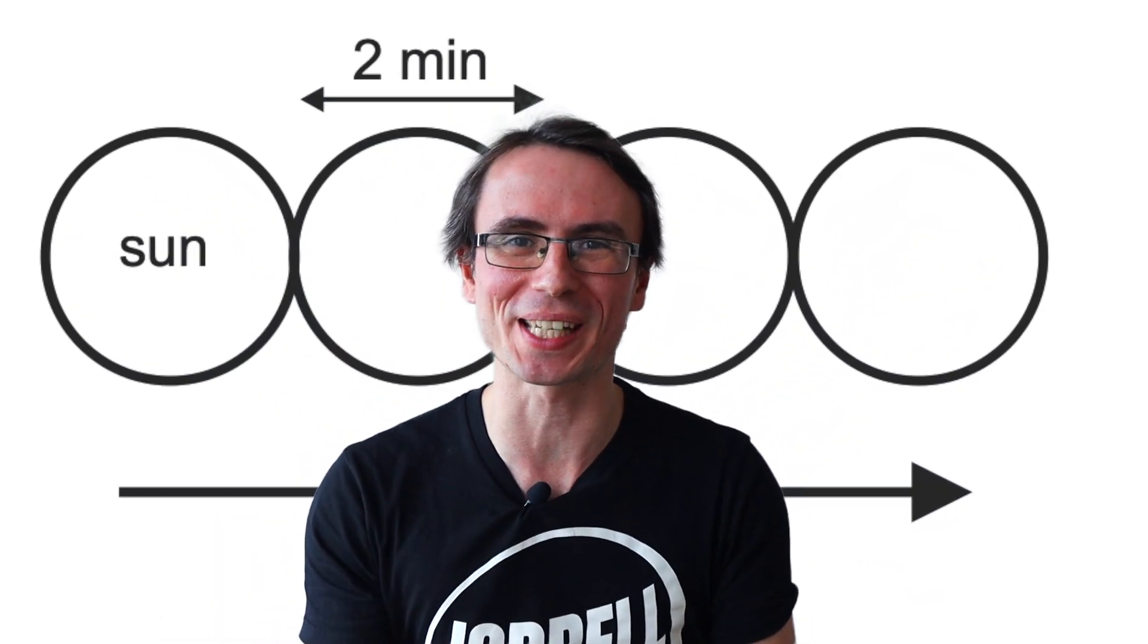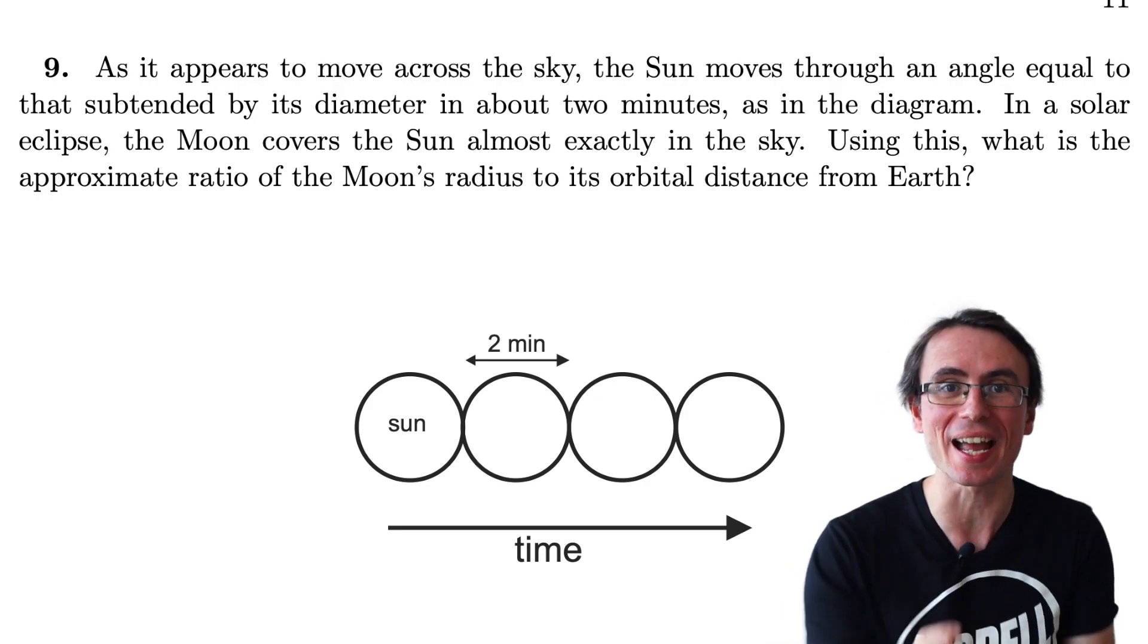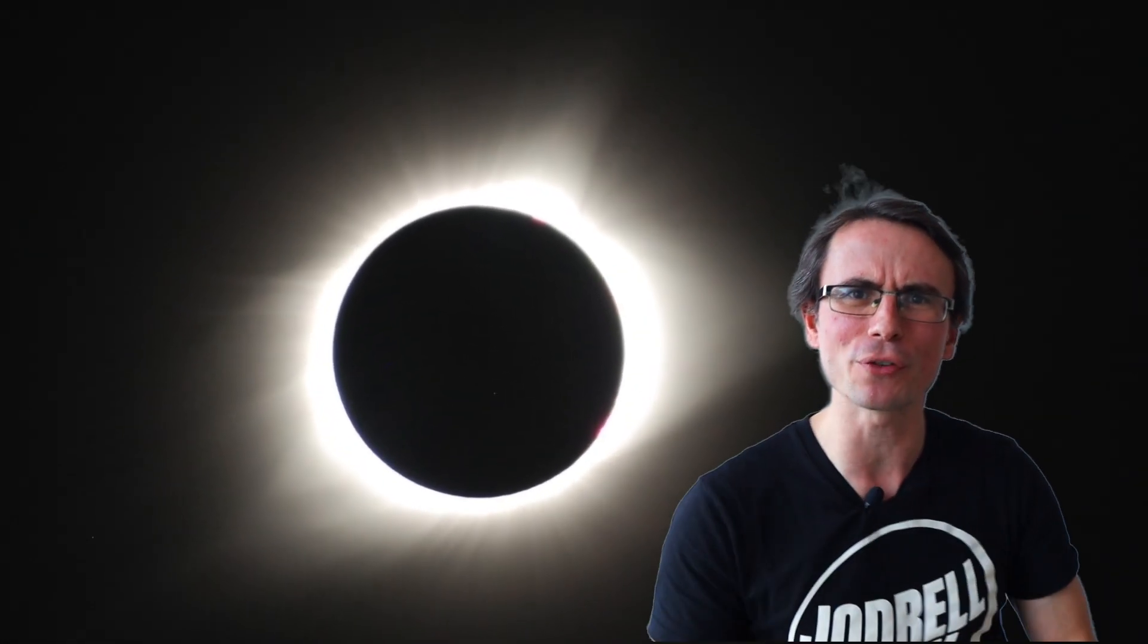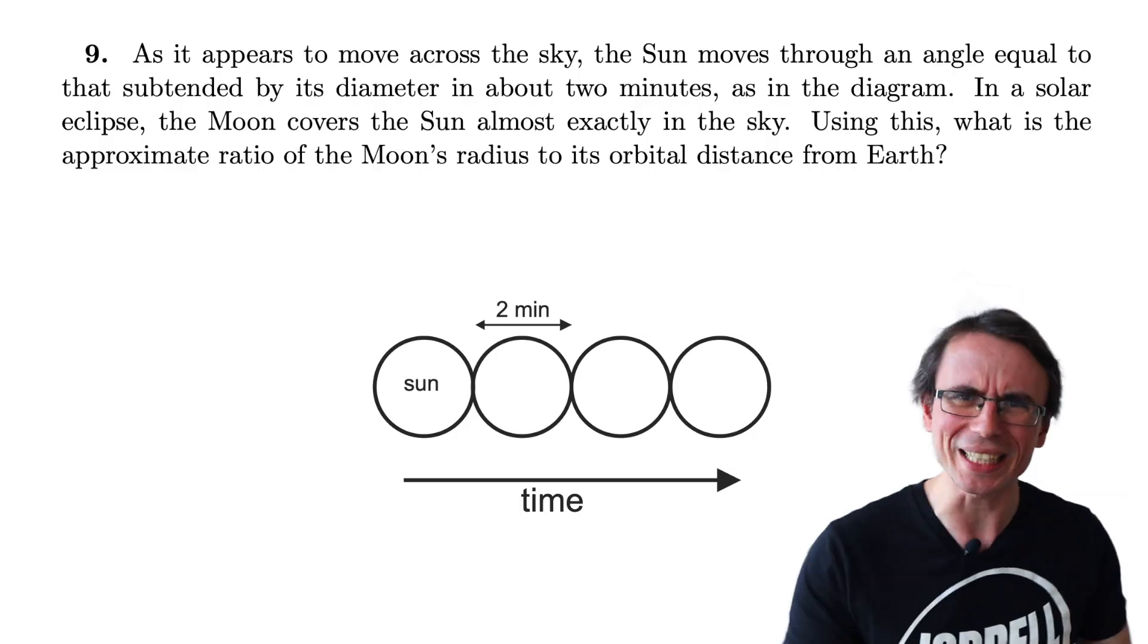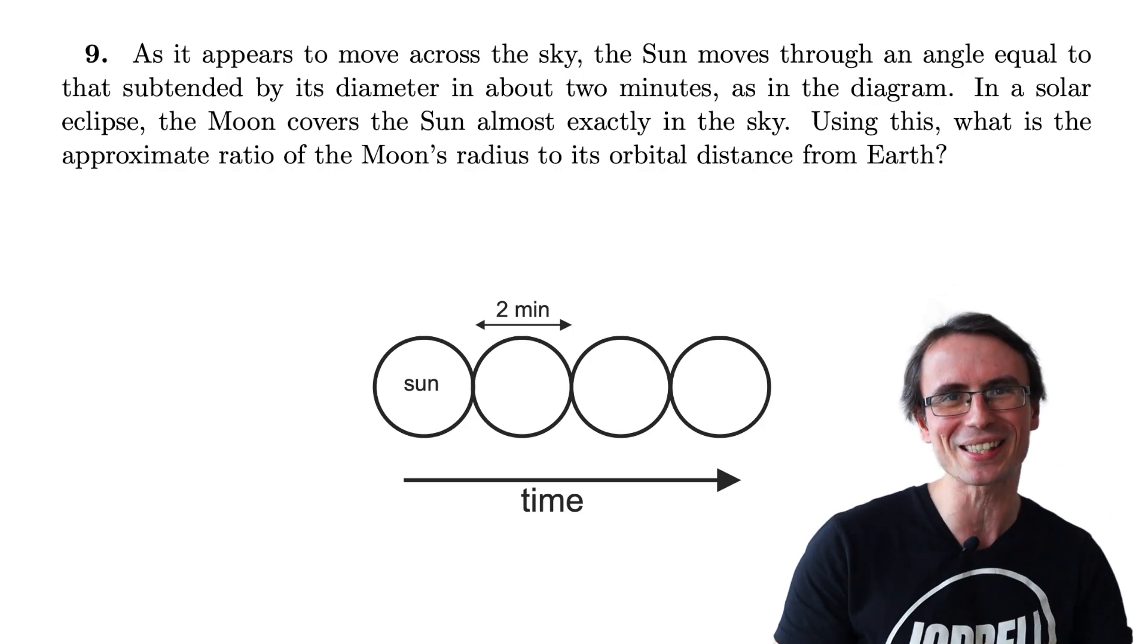Let's solve this really fun Oxford physics problem. The sun moves from an angle subtended by its diameter in about two minutes. Now in a solar eclipse the moon covers the sun almost completely. Can you work out the ratio between the moon's orbital radius to its mean orbital distance?